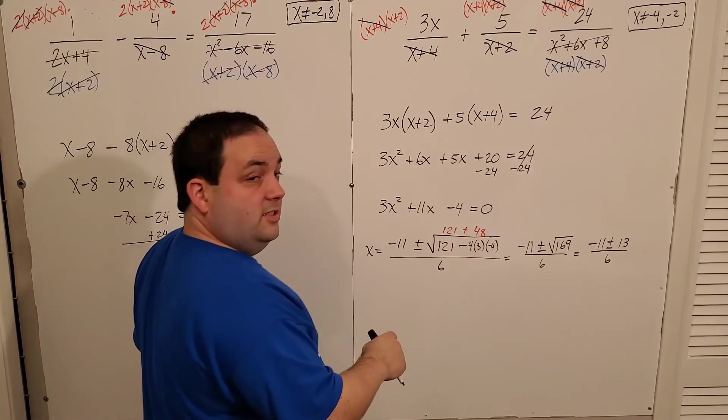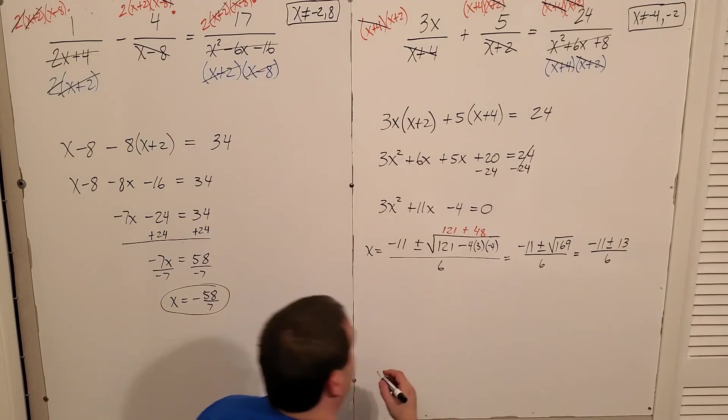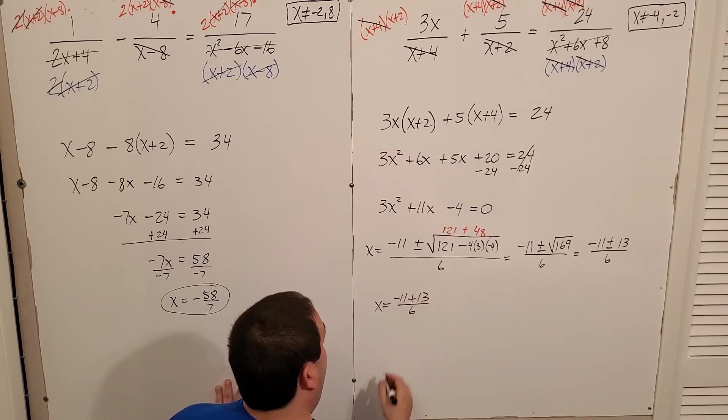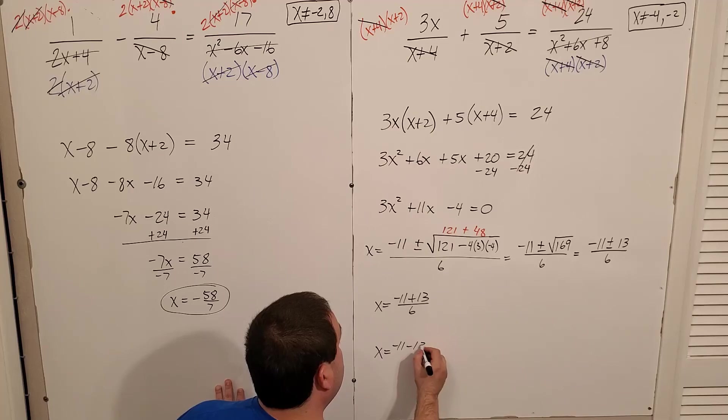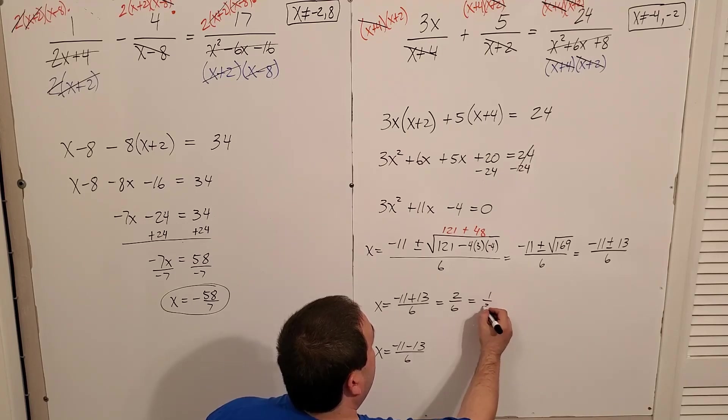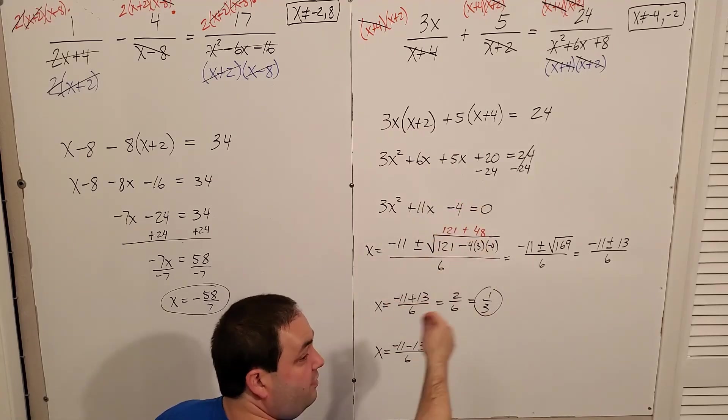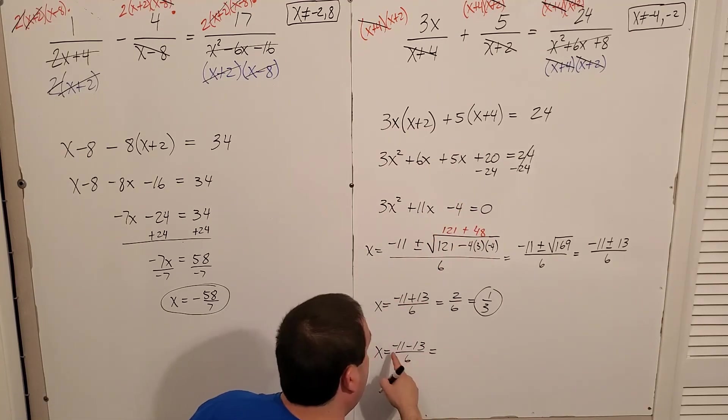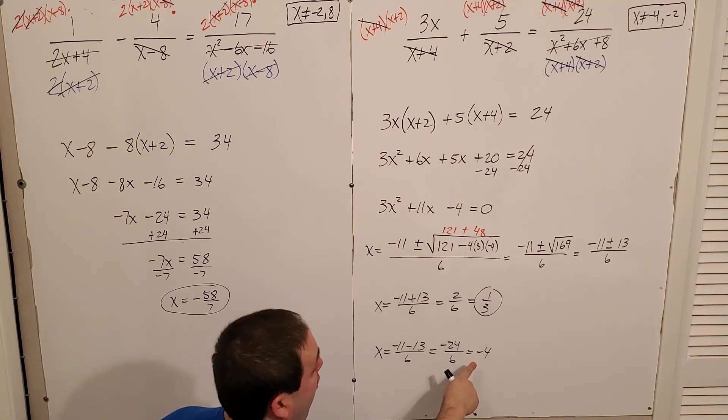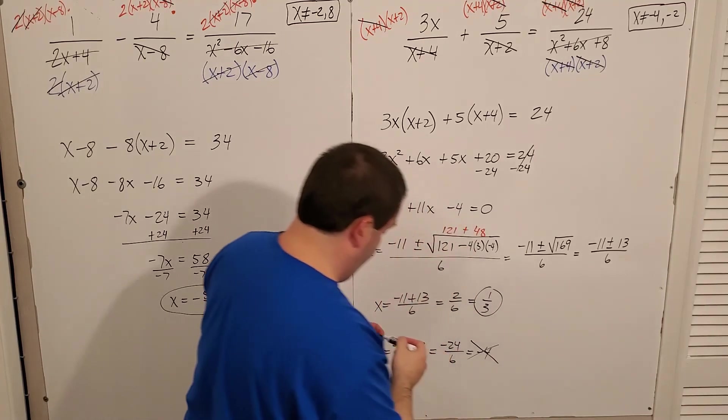Now, of course, in this case, since we got the radical was doable, I'm going to go ahead and add it out and get both answers, right? So either x is negative 11 plus 13 over 6 or x is negative 11 minus 13 over 6. Here I'm getting 2 over 6, which is one third, which I compared to my original, can't be negative 4, can't be negative 2. One third is good. Here I get negative 24 over 6, which is negative 4. Uh-oh. I can't have negative 4, so I don't use this one. And therefore, one third is my only solution here.